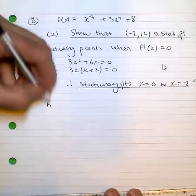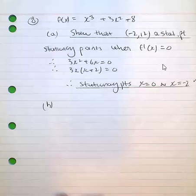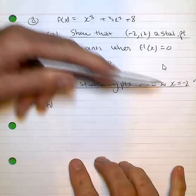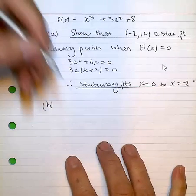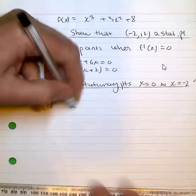The next part requires me to use a change in slope diagram, a change in sign in order to show that the nature of the turning point at x = -2 is probably a maximum. So what I'm going to do now, I'm going to do a change in sign diagram.